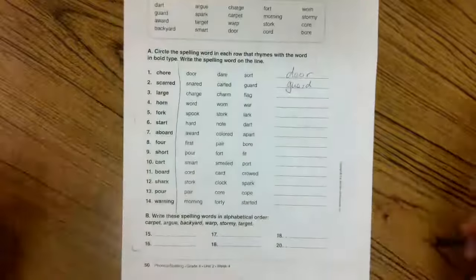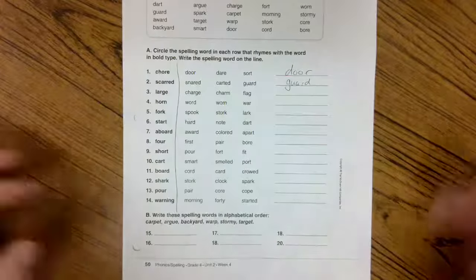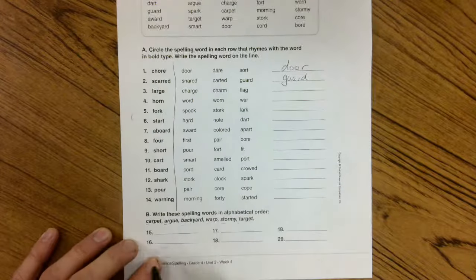All right, so for the first 14, you do it like that. Now on the bottom it says, write these spelling words in alphabetical order. Now it doesn't say the third letter because every first letter is different. Okay, now follow the numbers. They go down.